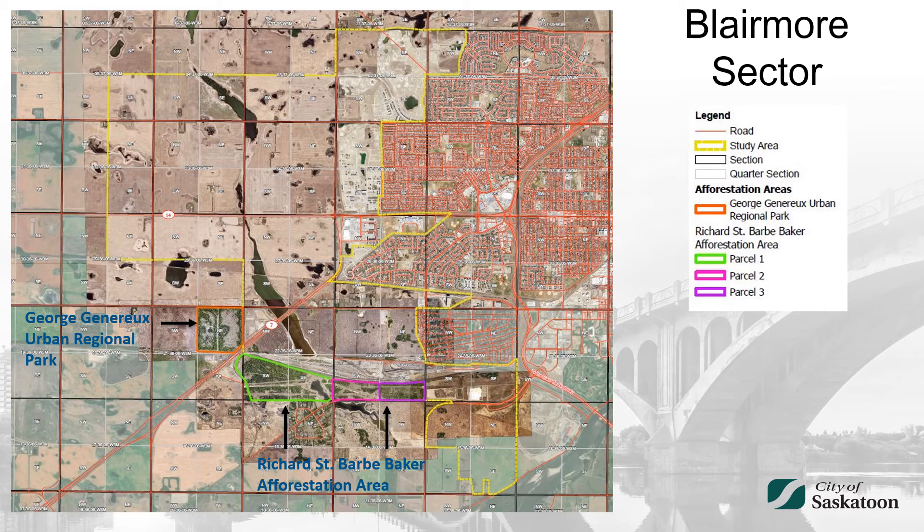Large natural areas found within the study area include the Richard St. Barbie Baker Aforestation Area, George Jenneroo Urban Regional Park, and the West Swale Wetland Complex that extends through the central portion of the study area.